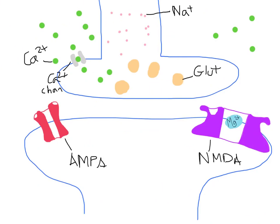When glutamate is released, it will bind to these receptors. In the case of the AMPA receptor, that will allow sodium ions in the extracellular space to pass through and depolarize the postsynaptic membrane, so the postsynaptic membrane is going to be at a less negative voltage as a result of the influx of sodium ions.